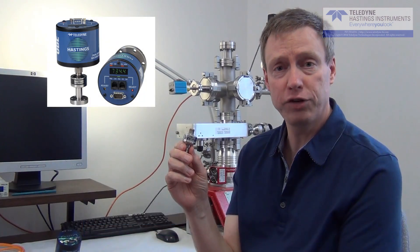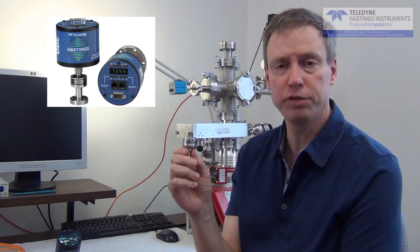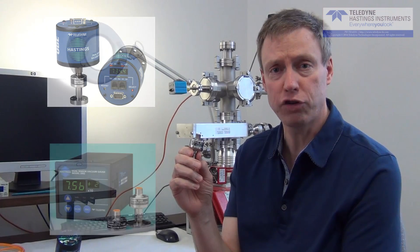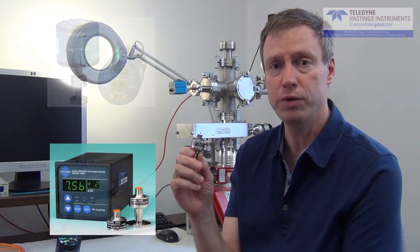We're going to take it down to the sensor level and show you how a gauge tube is put together, and then we're going to talk about the instruments that are used to power the 2002 vacuum gauge.